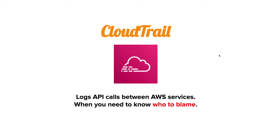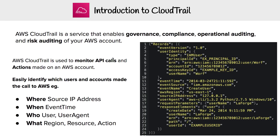The way I like to think about this service, it's when you need to know who to blame. CloudTrail is used to monitor API calls and actions made on an AWS account. And whenever you see these keywords — governance, compliance, operational auditing, or risk auditing — it's a good indicator they're probably talking about AWS CloudTrail.